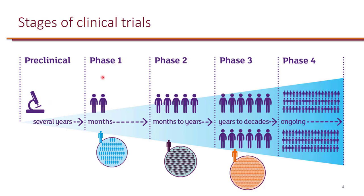Phase one clinical trials include patients who are actually healthy volunteers. It's a very small study, and they test the drug in healthy volunteers just to make sure that it's safe. Once it's proven to be safe, they enroll in a phase two study patients who actually have the disease, and this is the time where investigators try different doses to figure out the right dose that will be safe and effective.